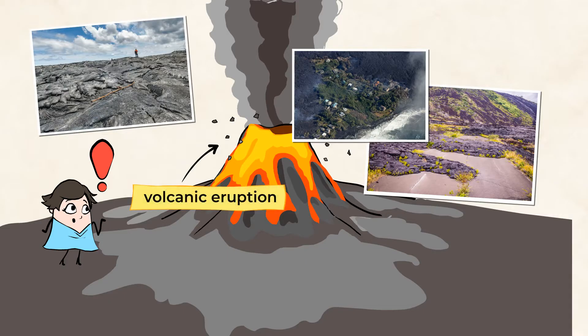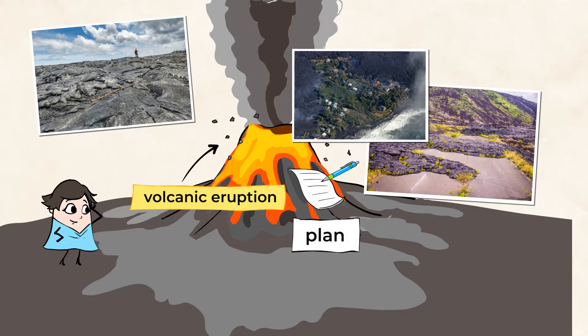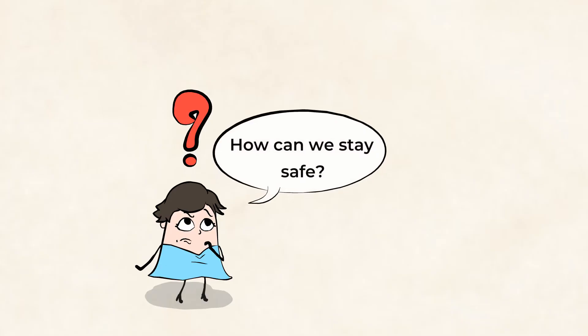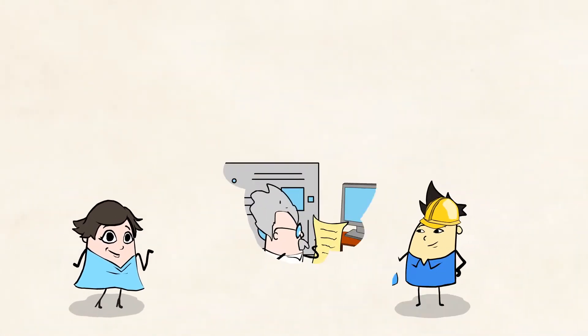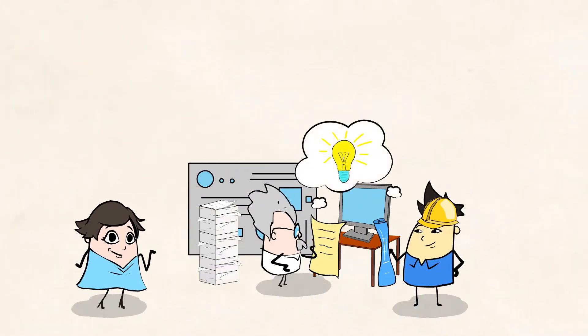We can't really stop acts of nature, like volcanic eruptions, but we can do our best to plan for them. How can we stay safe in situations like this? Let's take a look at some of the mighty solutions scientists and engineers have created to reduce the impact of extreme forces of nature.